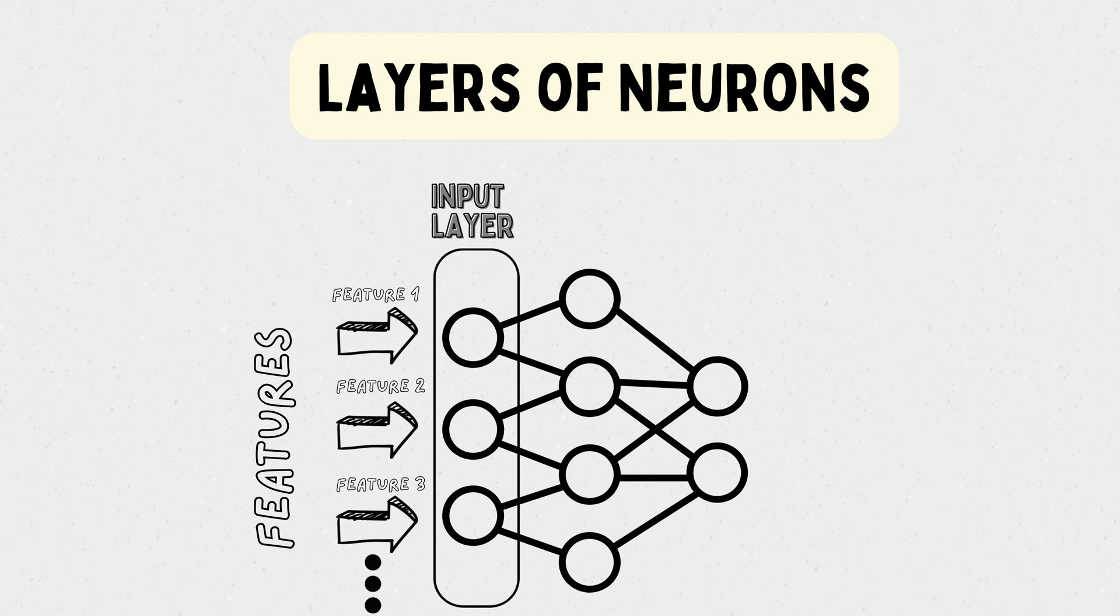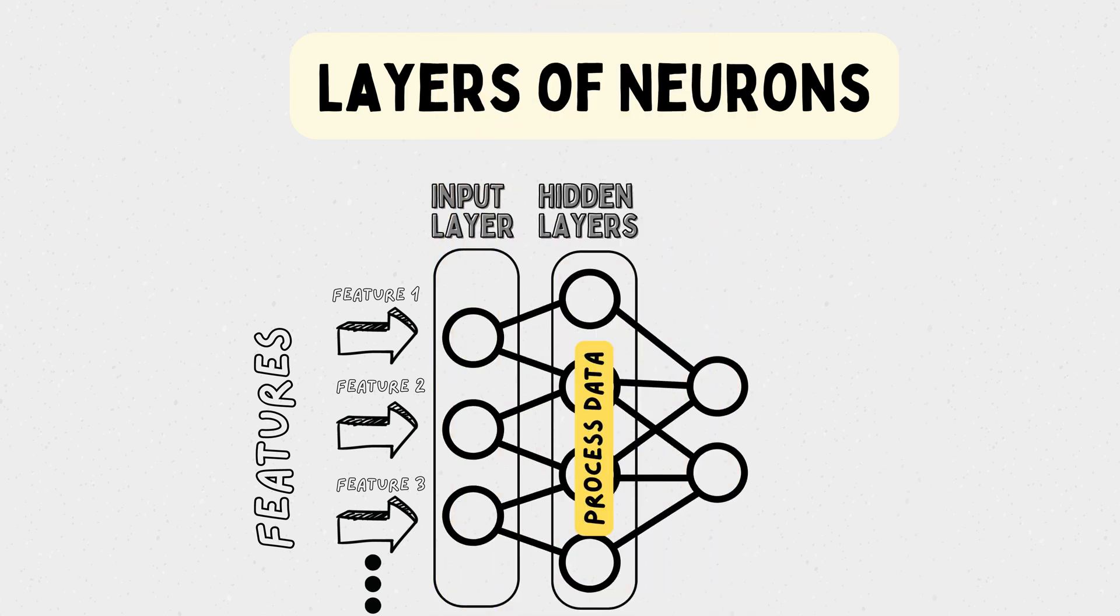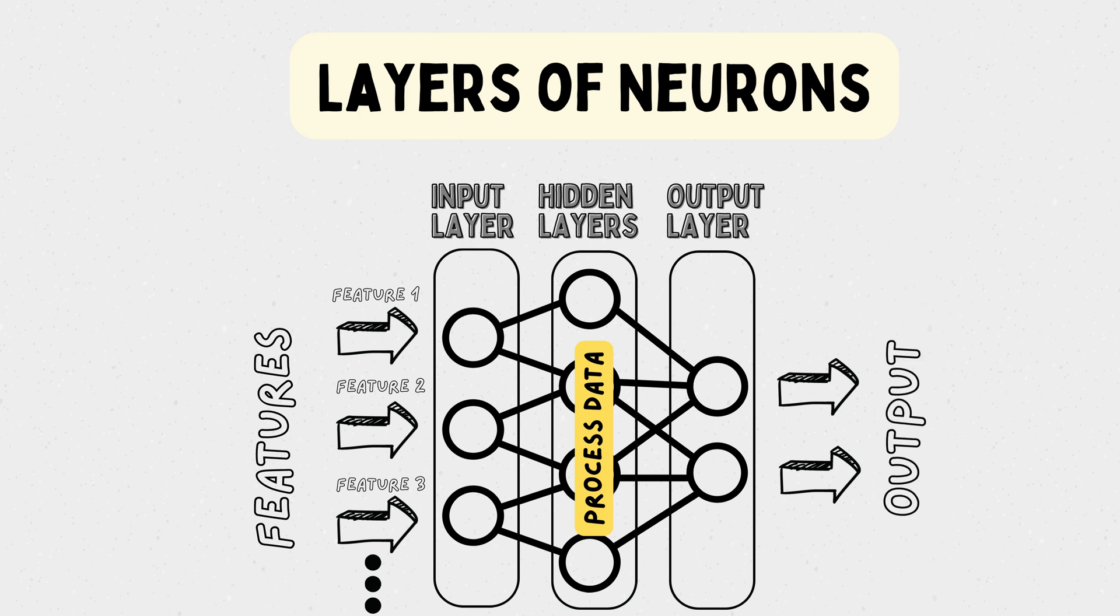The hidden layers are intermediate layers that process the data and extract relevant features. They are called hidden because their outputs are not directly observable. The output layer is the final layer that produces the network's output, which can be predictions, classifications, or any other relevant information based on the problem you're trying to solve.